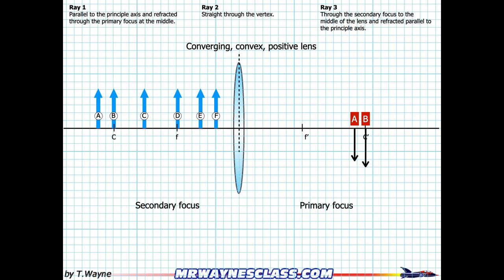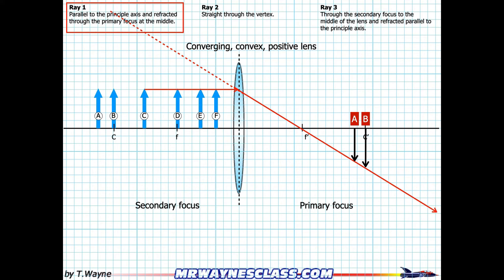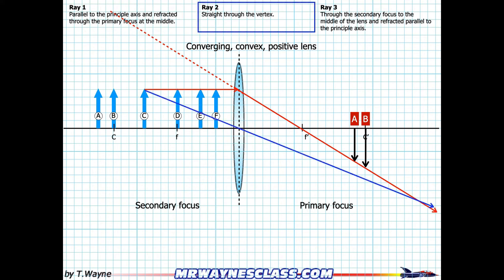For C, I draw my approximation line. Ray one goes parallel and then through the primary focus. Ray two goes through the vertex — from the tip of C downward. The tip of C will be where these two lines cross, and the base is right there on the axis. You can see I'm starting to notice a trend here.